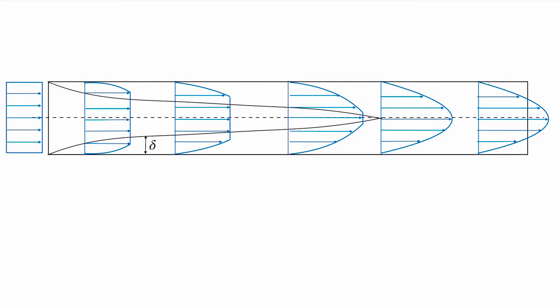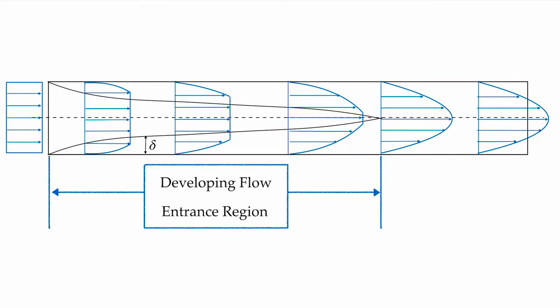We can imagine a boundary layer covering this region which, once we reach the fully developed region, has merged from all the walls in the pipe. So this entrance region is where we have developing flow, and once the developing flow has developed, we are in the fully developed flow regime.